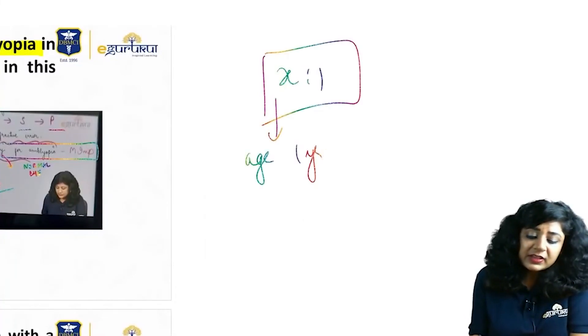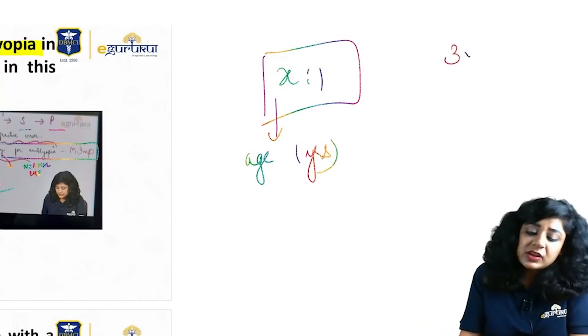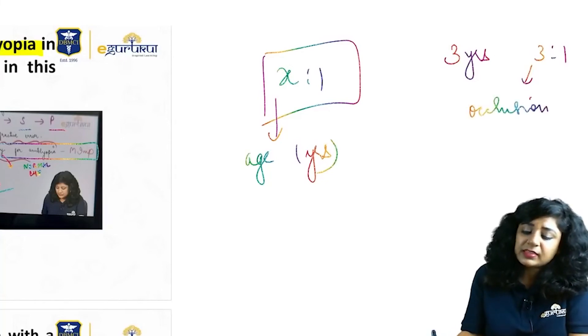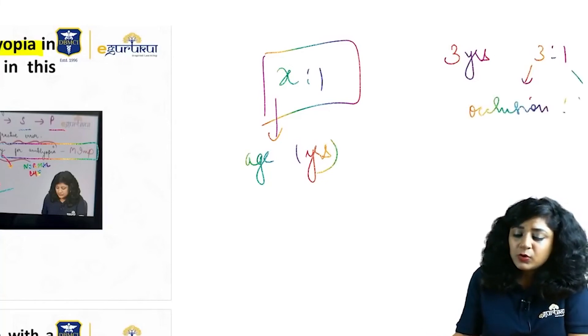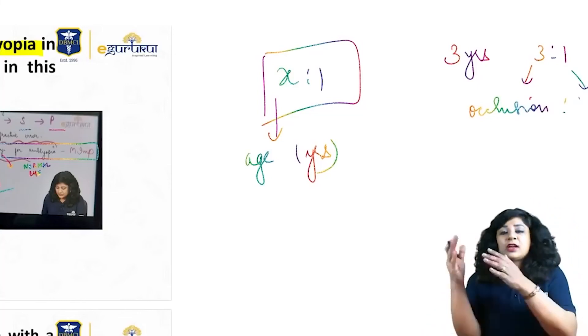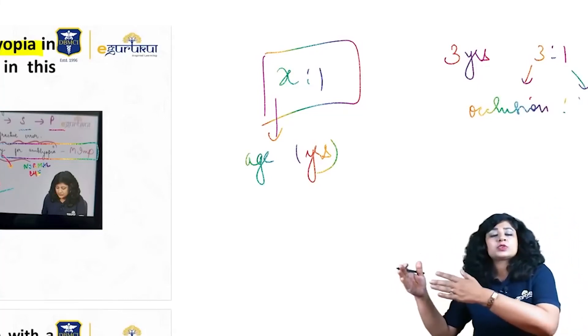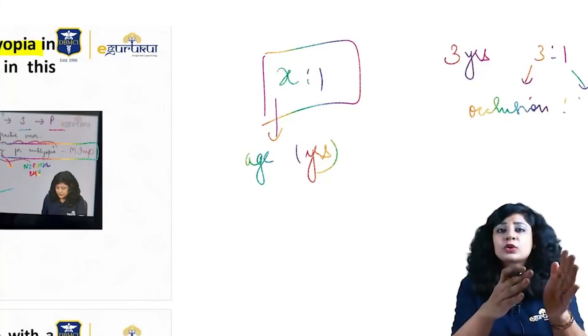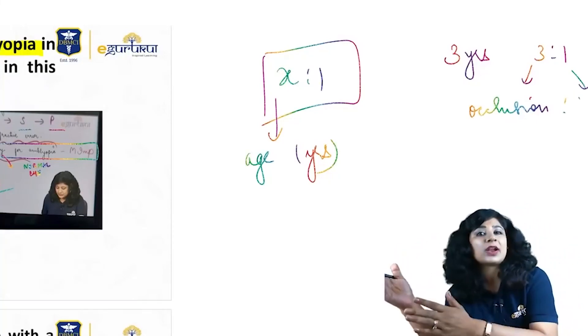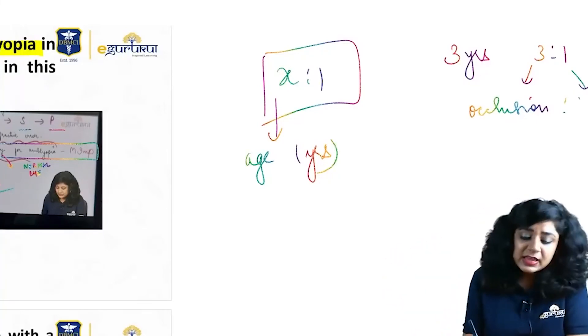So whatever age the child is - suppose the child is three years, so we have to do 3:1. Three days we do the occlusion and then one day we keep it open. Then three days occlusion, one day open, three days occlusion, one day open. Similarly, if the child is four years, then four days occlusion, one day open, four days occlusion, one day open.